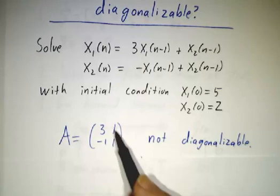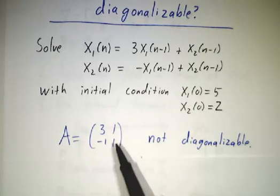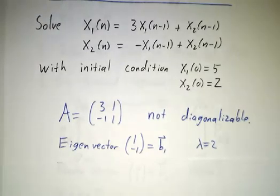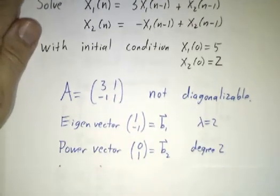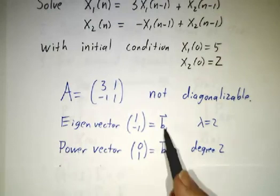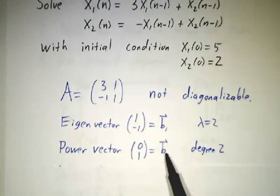So 2 has algebraic multiplicity 2, but there's only one eigenvector. The eigenvector is 1 minus 1. However, you can find a power vector 0, 1, and b1 and b2 provide a nice basis for R2.